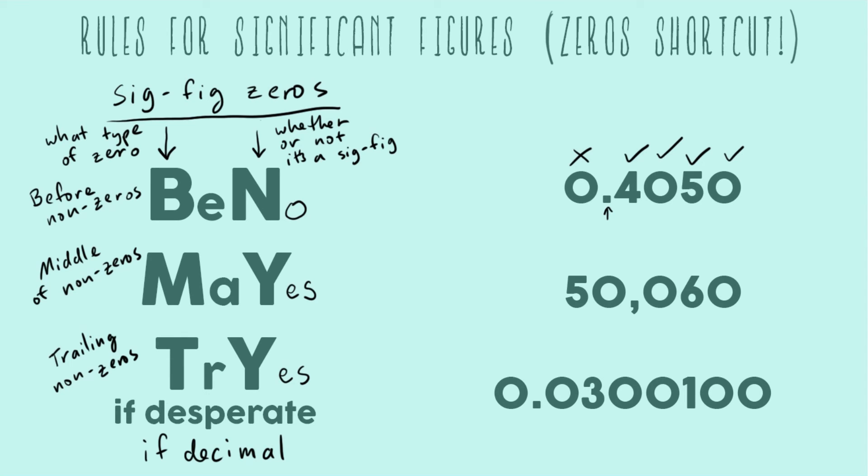So now going to our next example 50,060. Check off five and six. Those are going to be sig figs no matter what. And so we have our first two zeros in between five and six. They're sandwiched. And so they both count as sig figs because they're middle. Middle equals yes.